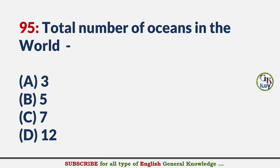Total number of oceans in the world? Answer B: Five.